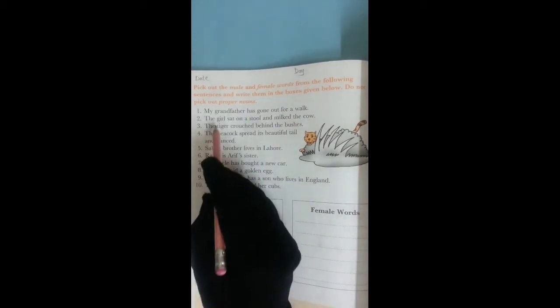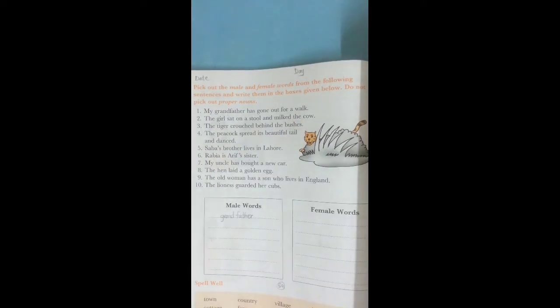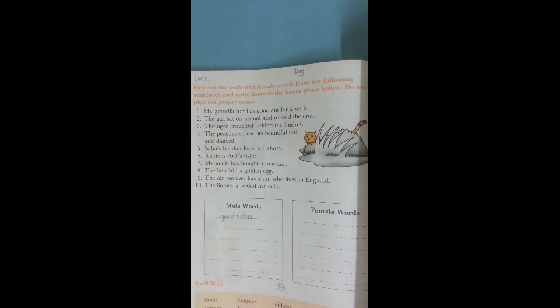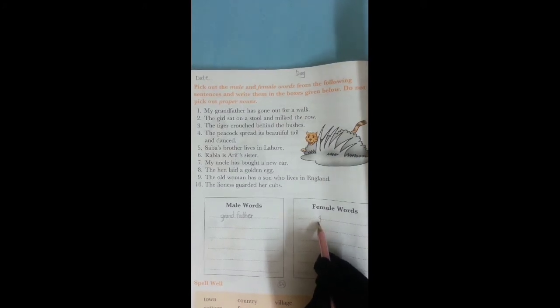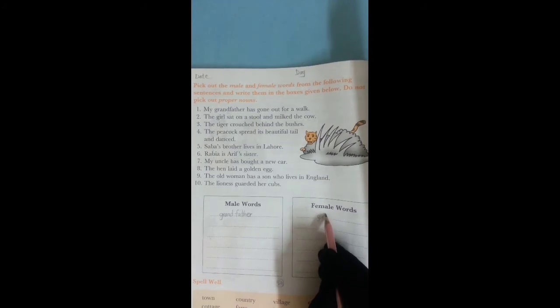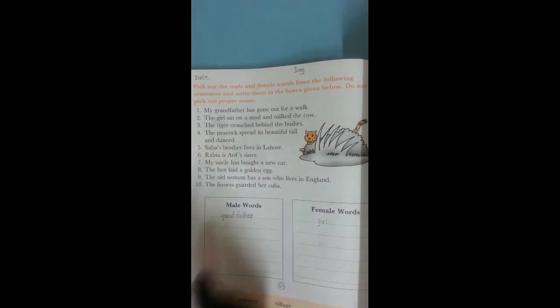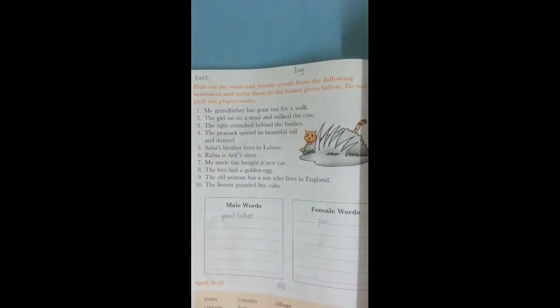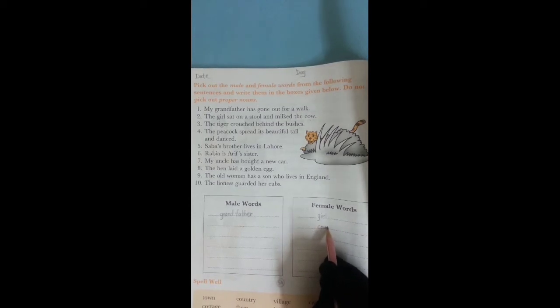Now let's start the second sentence and pick out the word. Yes, the girl sat on a stool and milked the cow. First we pick out the word girl. Where we write this word? Yes, we write in the female column. Girl is a female word. Is another word in this sentence? Find another word. Yes, cow. And cow is female. So we write in the female column.